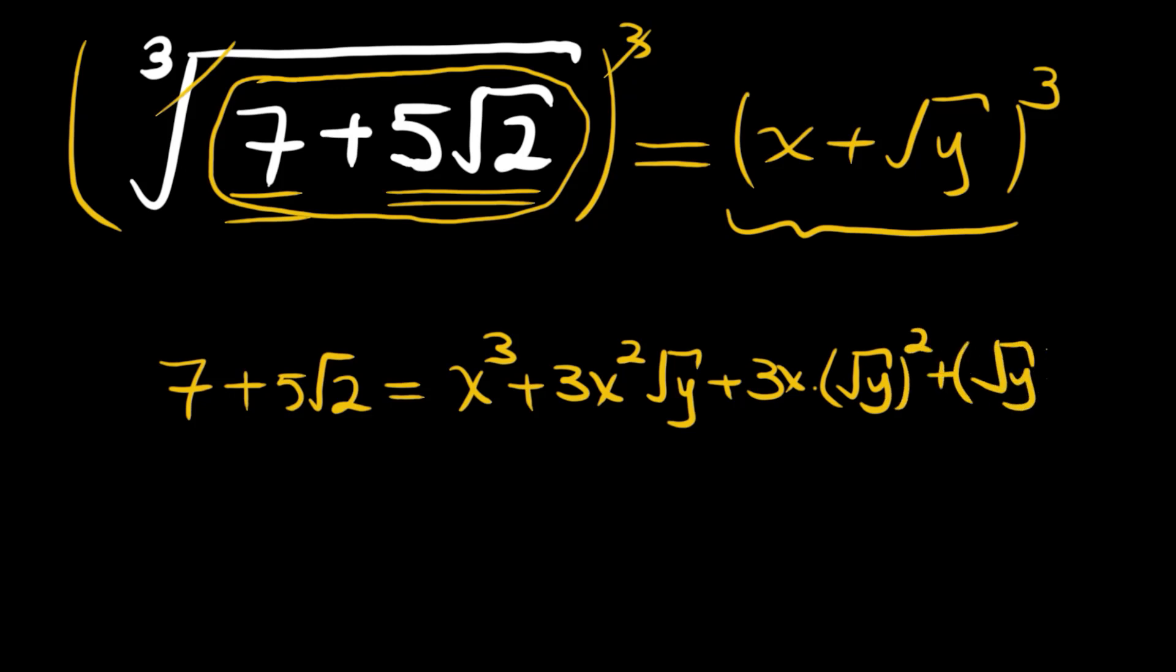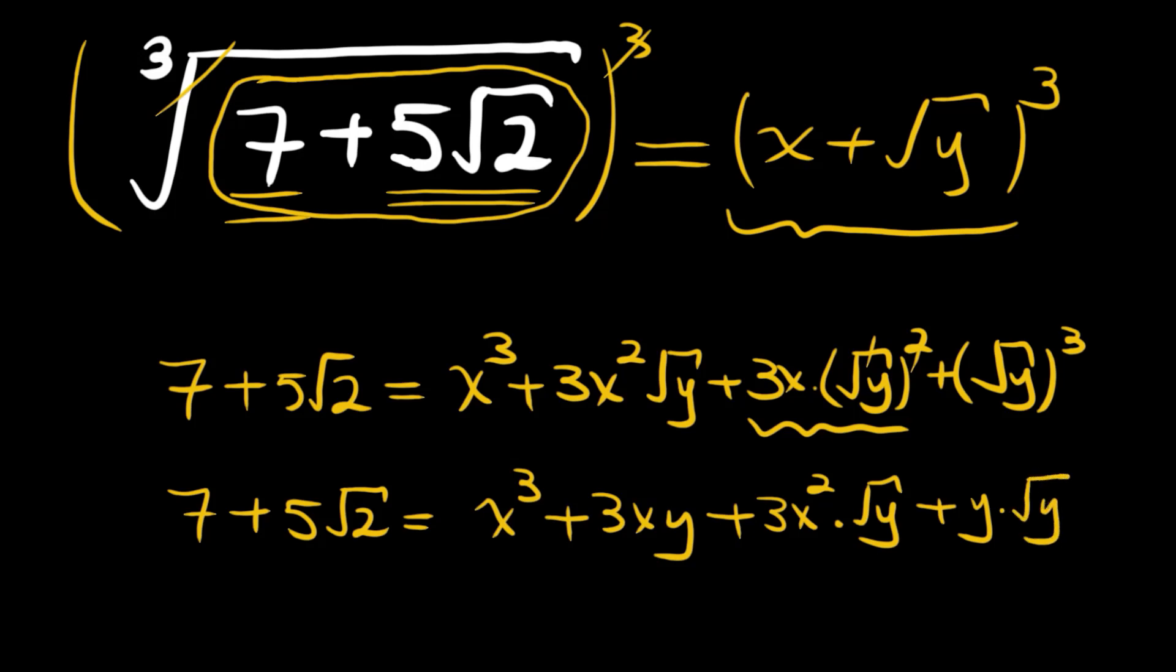Now let's rearrange this expression. 7 plus 5 root 2 equals x cube plus, this expression will be rational since the square root and square cancel, 3xy, plus 3x square times root y, and the last term is y times root y since the square of root y is y with one root y remaining.